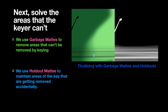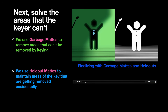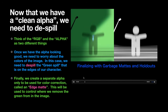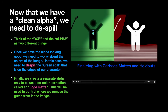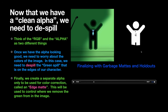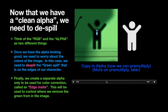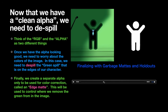We want to solve the areas that the keyer is not going to solve: garbage mats to remove areas that can't be removed by keying, and holdout mats to maintain the areas of the key we need to keep. We garbage mat out the microphone with a roto shape, stencil out the ground, and we have our alpha — but now we've lost the feet. So we rotoscope around the feet, animating the rotoscoping for the length of the shot, and restore the feet. Then we do the holdout over the tie. Our final alpha has the character repaired and the alpha complete.